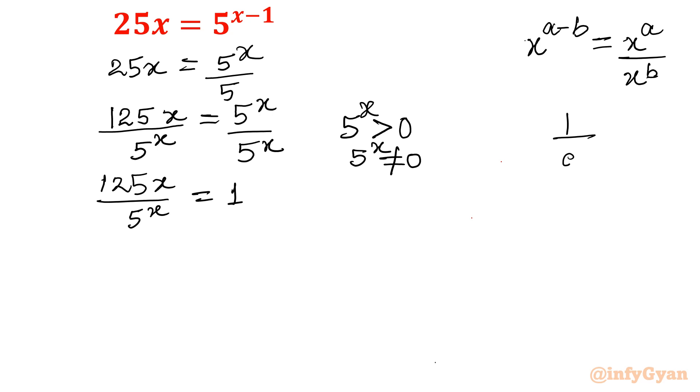Now I will write 125x over 5 power x equal to 1. Now 1 over a raised to the power x is equal to a power negative x. I will take this 5 power x in the numerator. So 125x times 5 power negative x equal to 1. Now let us write all the terms: constant terms to the right and variable to the left. So equation will be x times 5 power minus x equal to 1 over 125.